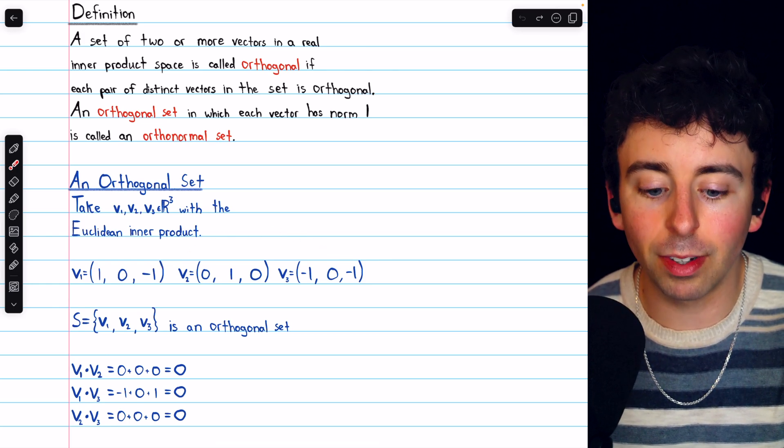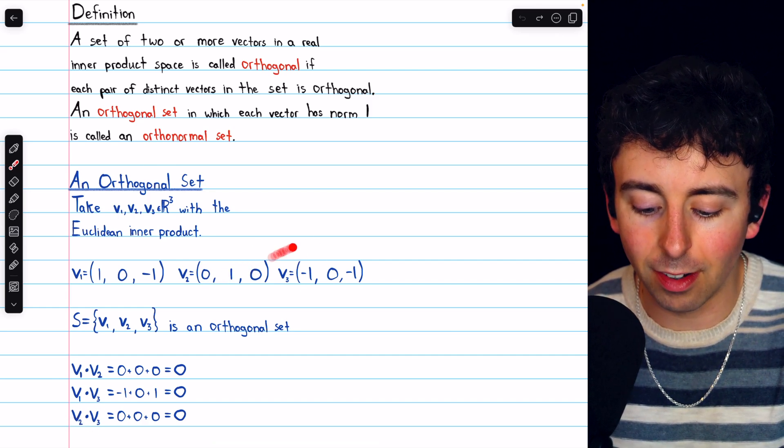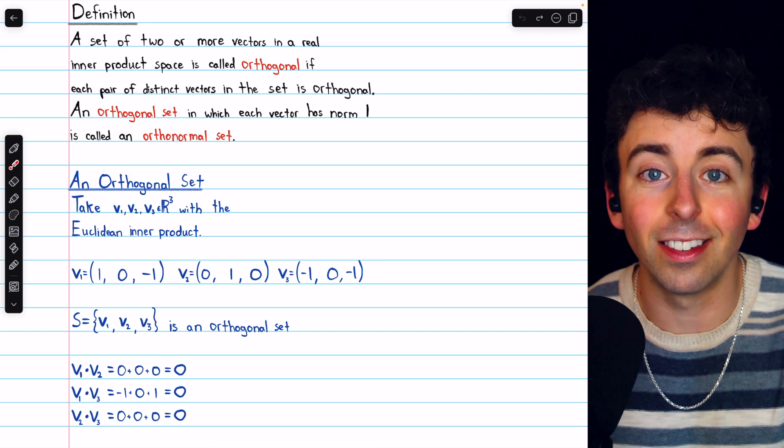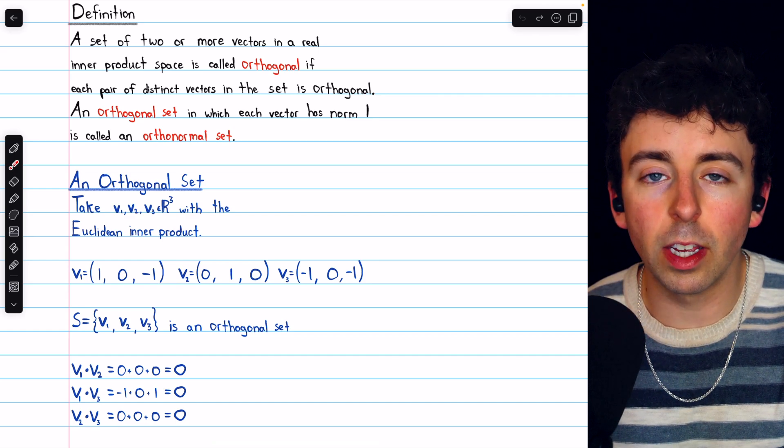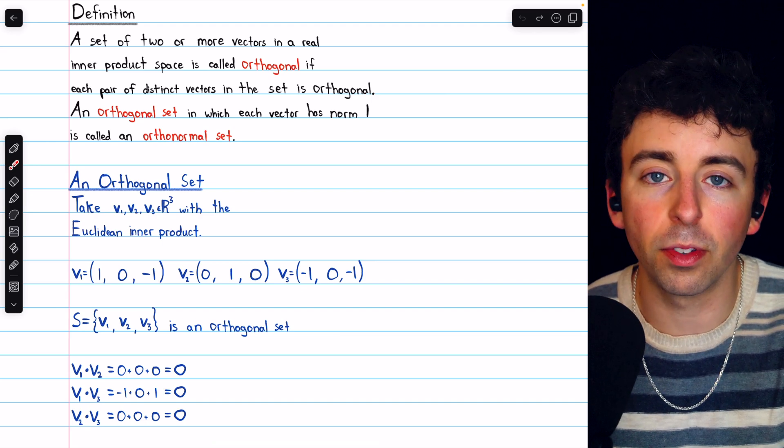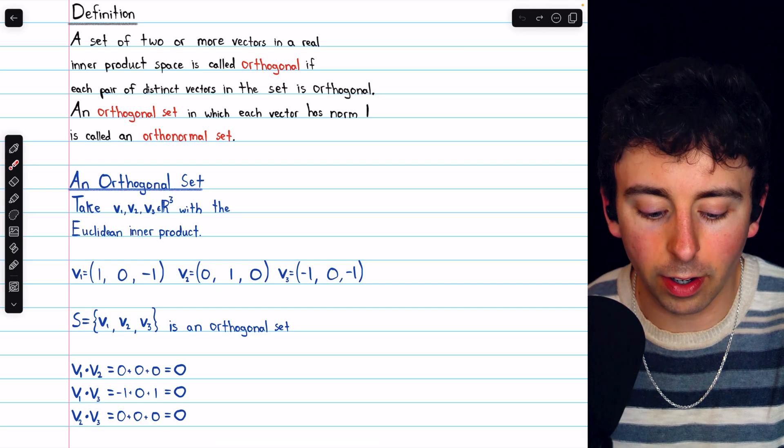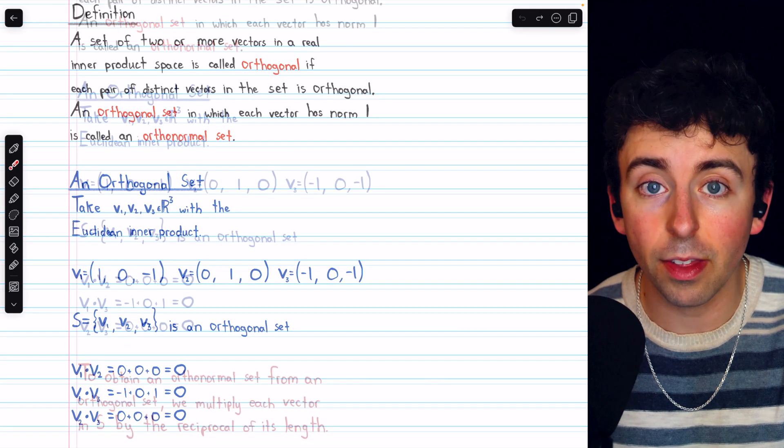The last pair of distinct vectors is V2 and V3, and their dot product we see is 0 plus 0 plus 0, so 0. The dot product is commutative, so of course we don't have to check V2 dot V1 and all those other orders. This suffices to verify that S is an orthogonal set. All of these vectors are orthogonal to each other.